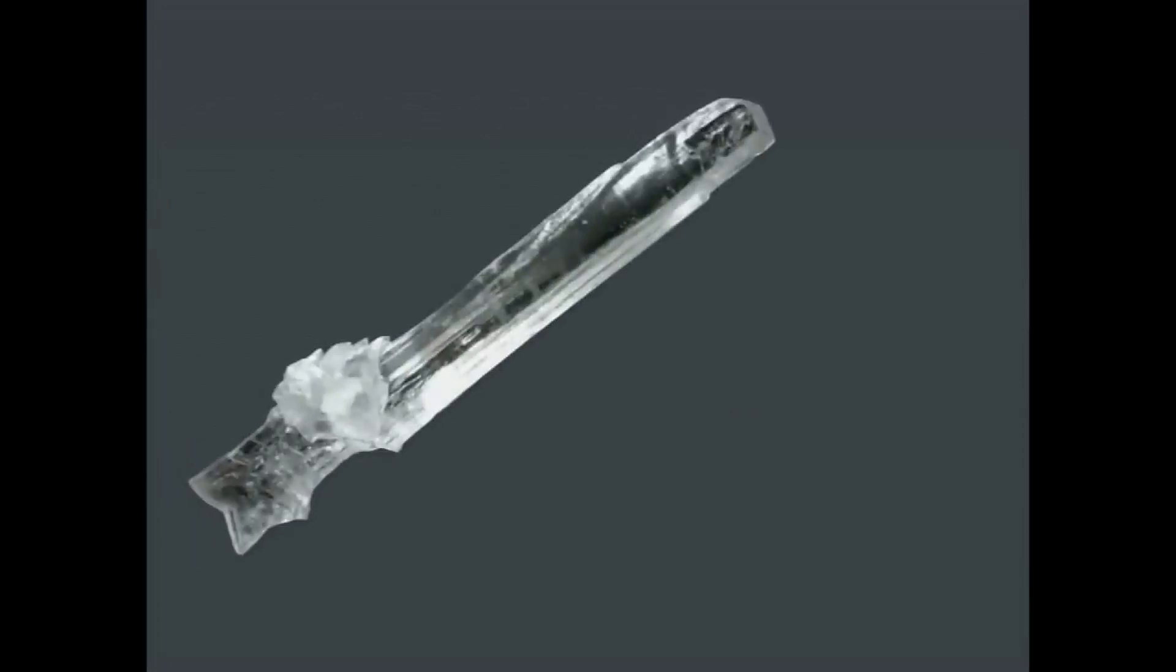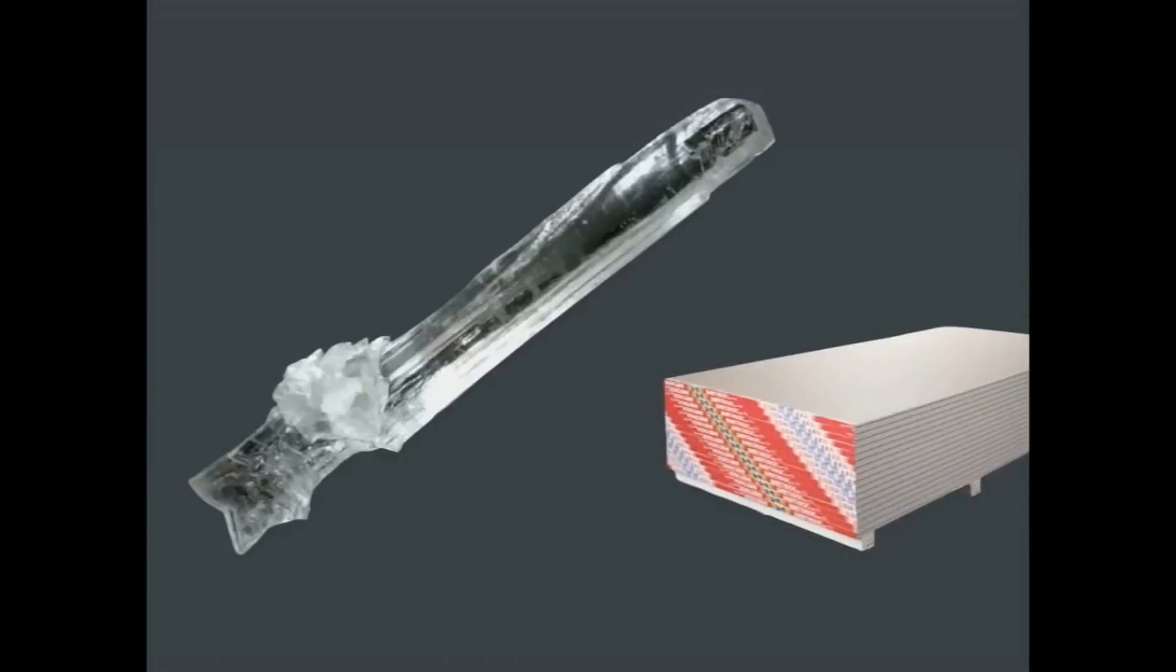One more example, this is a mineral selenite gypsum, which is used all around us in drywall. This is the material that's used to build the walls inside modern houses and buildings.